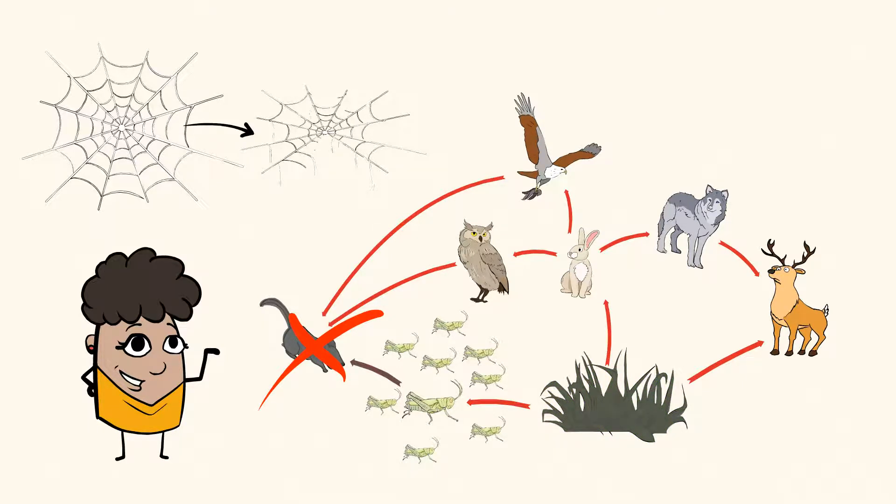This leaves less food for the rabbits and deer. The hawk and the owl will not have the mice to eat. And this means they'll hunt more rabbits. The rabbits are now low on food and being hunted more and more by the owls and the hawks. Yikes! This is not looking good for the rabbits in this forest.